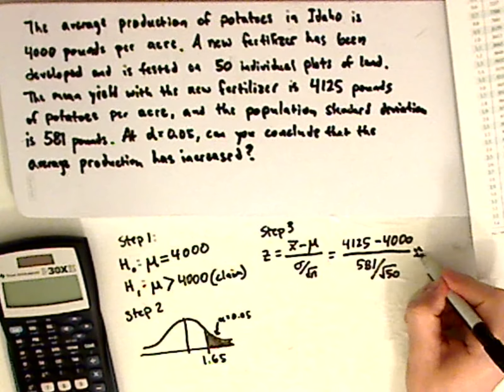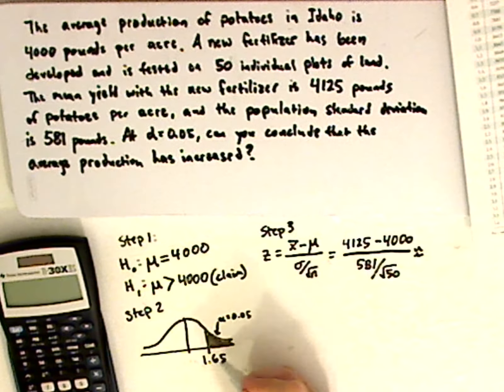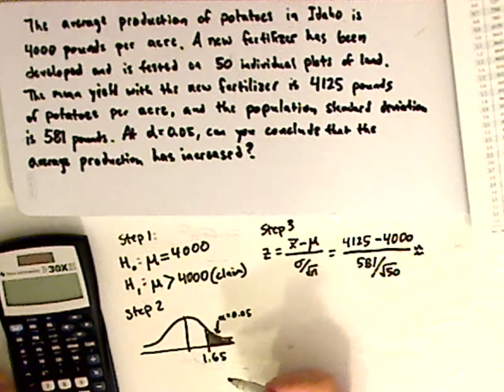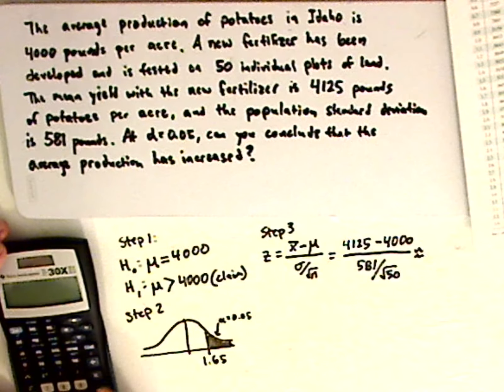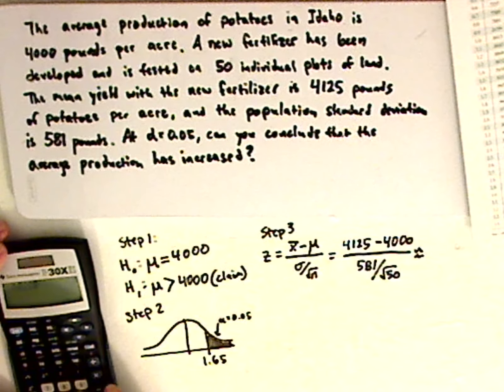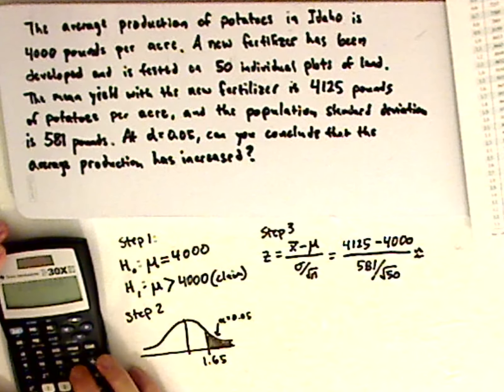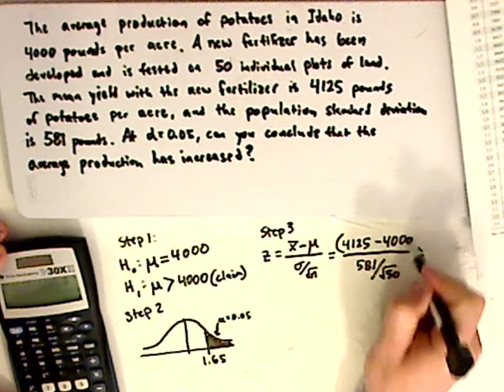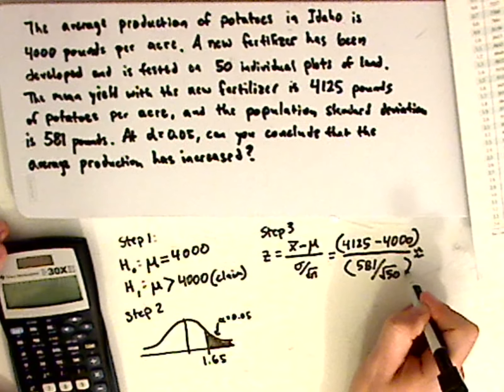Now I'm going to round to two decimal places, and the reason why I'm doing that is because of this. You can use three, it doesn't matter. I just try to match it. So I have 4,125 minus 4,000 parentheses. And I'm putting this whole entire thing in parentheses. I'm going to have to put the whole denominator in parentheses as well.